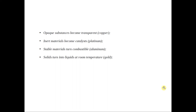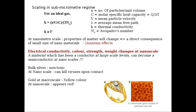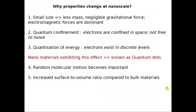Stable materials can become combustible — for example, aluminum, which we use for many applications and is stable at bulk stage, but becomes very dangerous at nanoscale. Also, solids can turn into liquids at room temperature — for example, gold. So why do all these physical properties change at nanoscale? What happens within the material that causes changes like color, toxicity, conductivity, or transparency?